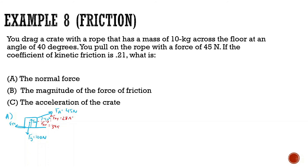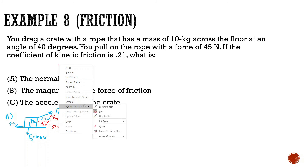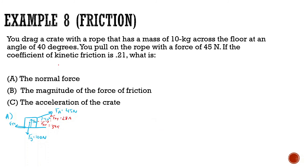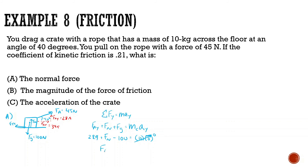Now we're looking for the normal force in the y direction. Sum of all forces in y equals mass times acceleration in y. The forces in y are: force applied in y (28.9), force normal (unknown), and force of gravity (negative 100). The crate is not moving in the y direction, so acceleration in y is zero. Solving: force normal equals 100 minus 28.9, which gives us 71.1 newtons.